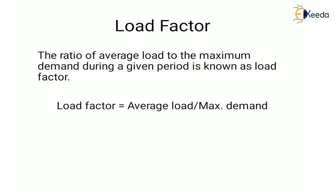Next is load factor. The ratio of average load to maximum demand during a given period is known as load factor. Higher the load factor of the power station, lesser will be the cost per unit generated, because higher load factor means lesser maximum demand. The station capacity is selected such that it meets the maximum demand, so lower maximum demand means lower capacity of the plant, which reduces the cost of the plant. Load factor is always less than 1.